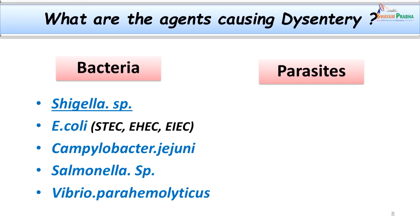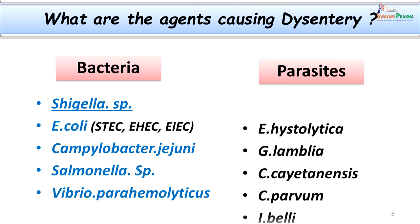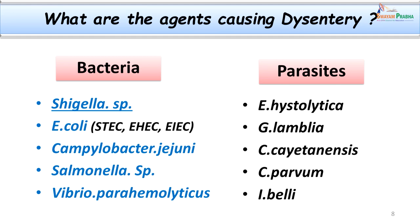Among E. coli, STEC (Shiga toxin-producing E. coli), EHEC (Enterohemorrhagic E. coli), and EIEC (Enteroinvasive E. coli) can all result in a similar condition. Other important bacteria include Campylobacter, Salmonella species, and Vibrio parahaemolyticus. Parasites can also cause dysentery — the important ones being Entamoeba histolytica, Giardia lamblia, and others.